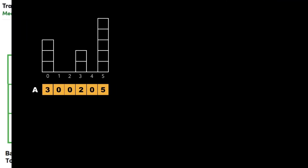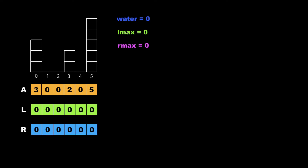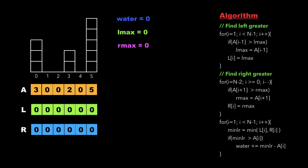Now let's have a look at the approach to solve this problem. Consider 6 blocks whose heights are 3, 0, 0, 2, 0, 5. We declare a few variables: water, lmax (left max), and rmax (right max), and initialize all of them to 0. We also create two arrays to store the left greatest and right greatest elements for each position.